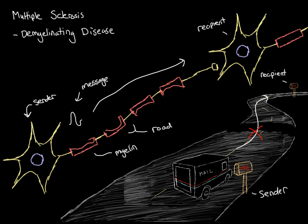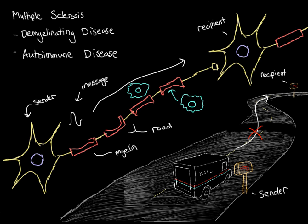This is where the disruption in communication occurs. When the myelin is degraded, the action potential won't travel down the axon as quickly, and sometimes it may not travel down at all. What causes that degradation? In multiple sclerosis, the immune system sneaks its way into the brain and mistakenly recognizes the myelin as foreign. When it mistakenly recognizes it as foreign, it starts to attack the myelin, causing this degradation. Because the immune system is attacking the body itself, we also call multiple sclerosis an autoimmune disease.